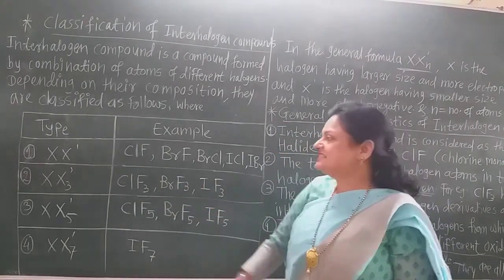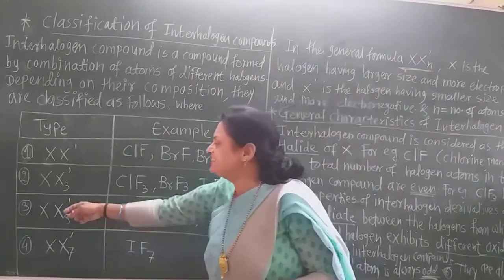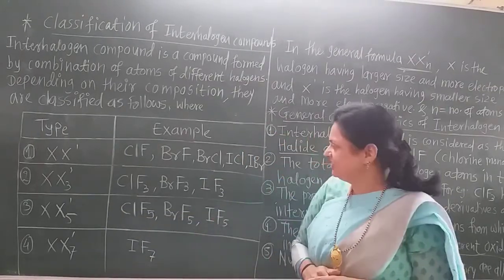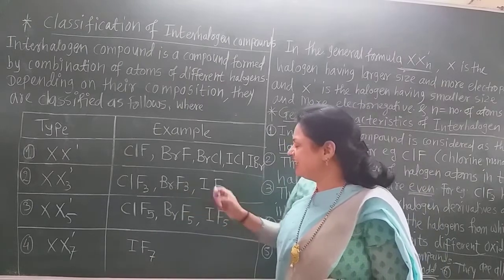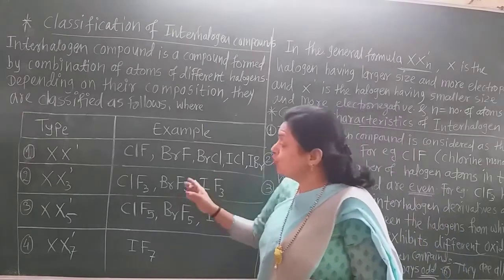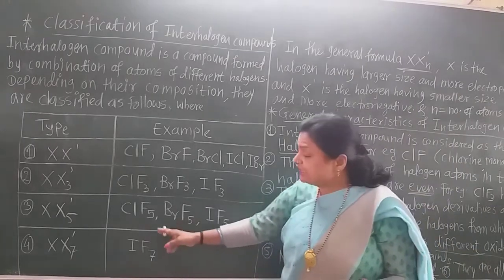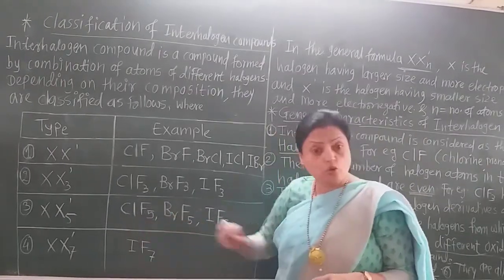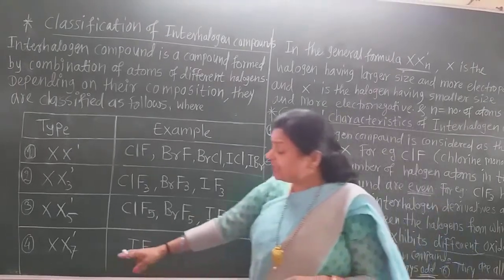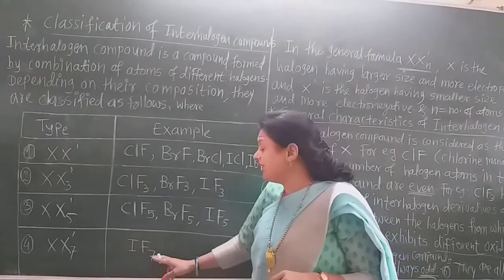The next type is XX'5. X' is more electronegative, and the examples are all fluorides — chlorine pentafluoride, bromine pentafluoride, and iodine pentafluoride. Fluoride is more electronegative so it always becomes the anion. The last type is XX'7; there is only one example: iodine heptafluoride.